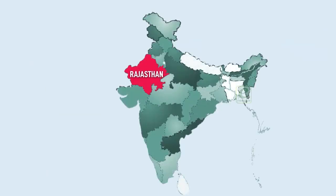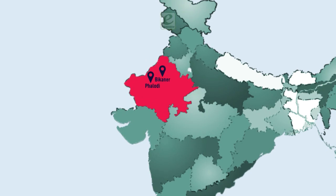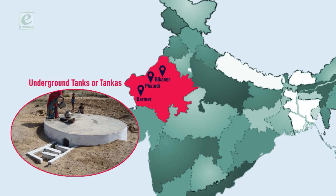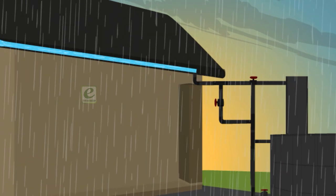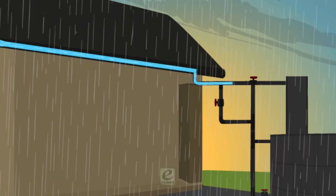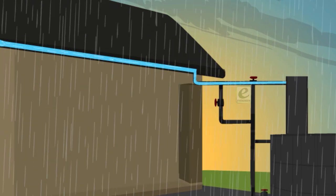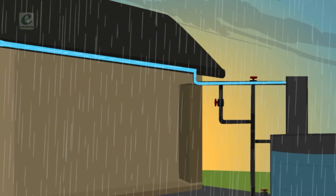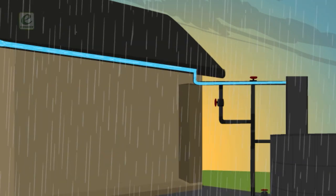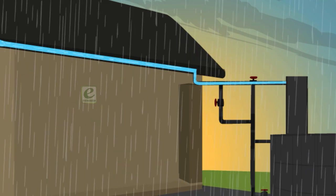In the semi-arid and arid regions of Rajasthan, particularly in Bhalodi, Bikaner, and Barmar, most houses had underground tanks or tankas for storing water. A rooftop rainwater harvesting system was used to store water, and these tanks were part of well-developed rooftop rainwater harvesting systems. Rain falling on rooftops would travel down a pipe and be stored in these underground tankas.